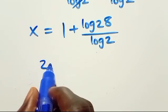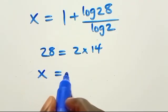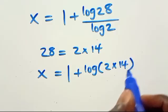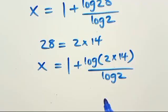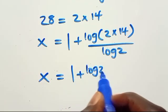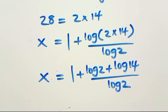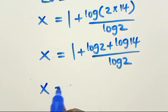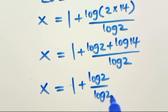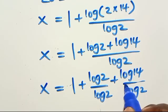We can express 28 as the product of 2 times 14. So from here we have x equals 1 plus log(2 times 14) over log 2. Applying the product rule again, this gives x equals 1 plus log 2 plus log 14, all over log 2.